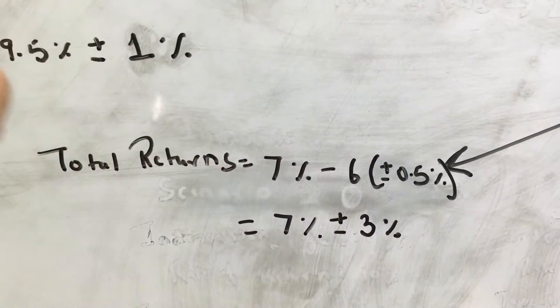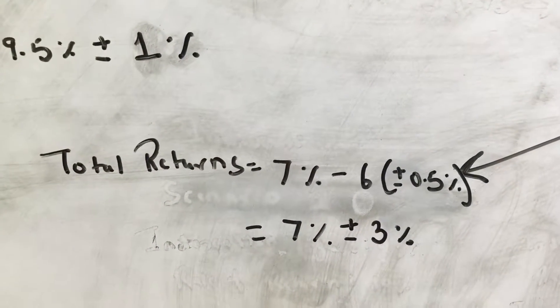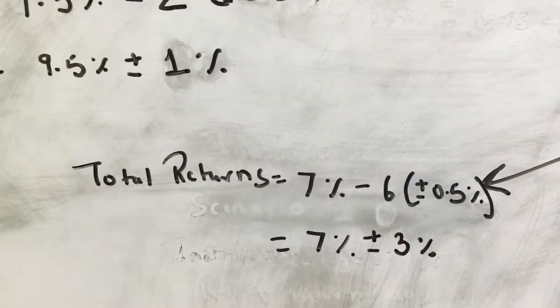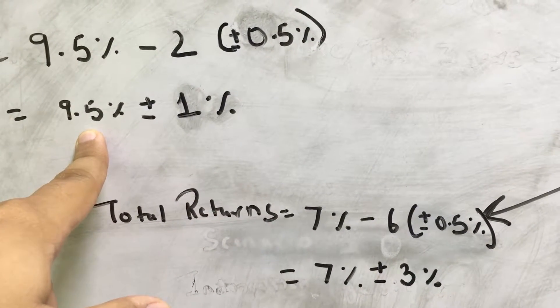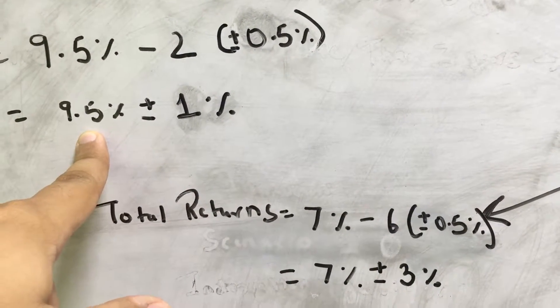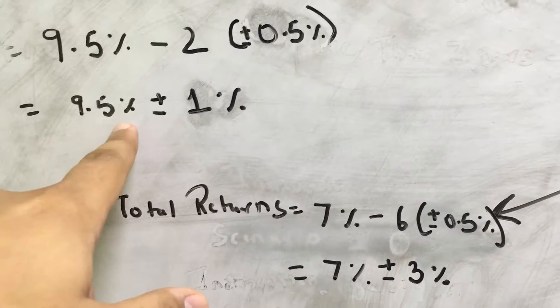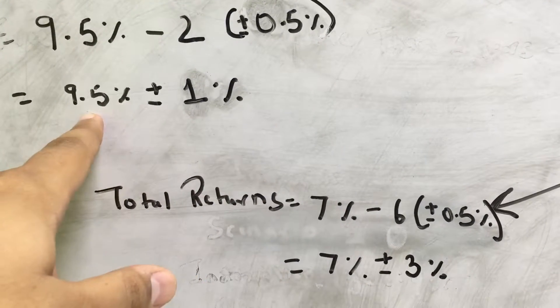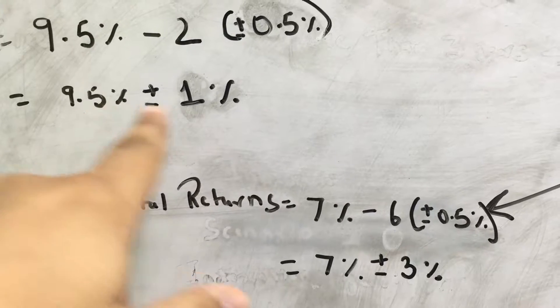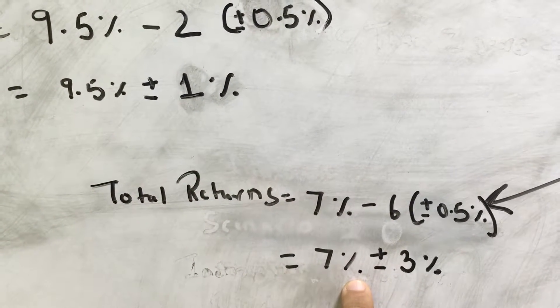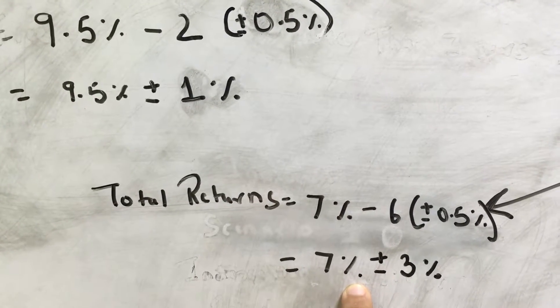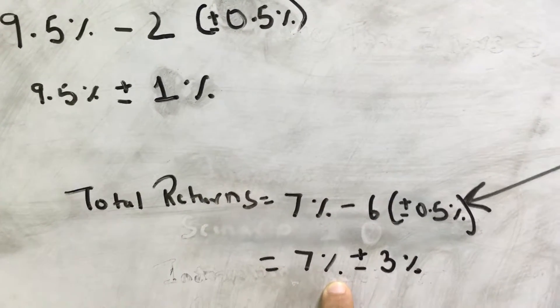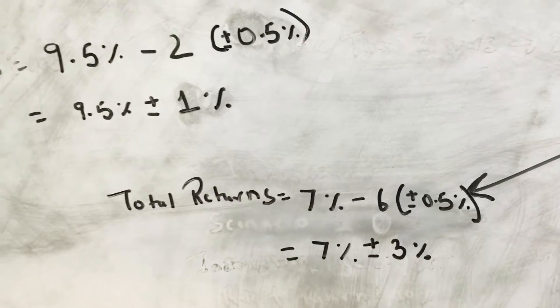Let's take a bad example. Let's say we keep the YTM the same and instead of a rate cut there is a rate hike in the economy. Your accrual funds will still end up getting 8.5%, but in a dynamic or income fund your returns will go down by about 3% and will come down to 4% per annum.